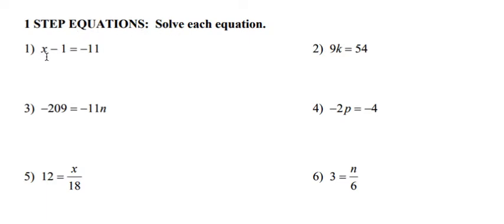For number 1, we have x minus 1 equals negative 11. In order to get x by itself, we need to move the negative 1 over to the other side. The way that we move it to the other side is by adding 1 on both sides. On the left side, we're left with x, and on the right side, negative 11 plus 1 is going to be negative 10.